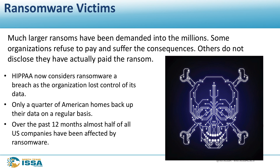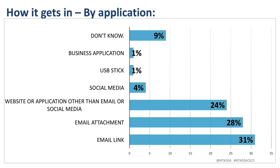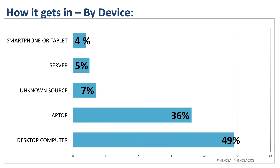Who believes it's actually 25%? I think maybe 1–2% actually back up their data regularly. It's also interesting that over the past 12 months, 50% of U.S. companies have reported being affected in some way by ransomware. The main vectors for compromise are email attachments and links going to exploited pages, with most infections coming in through endpoints — laptops and desktop computers — though they are also coming in from servers, smartphones, and tablets.